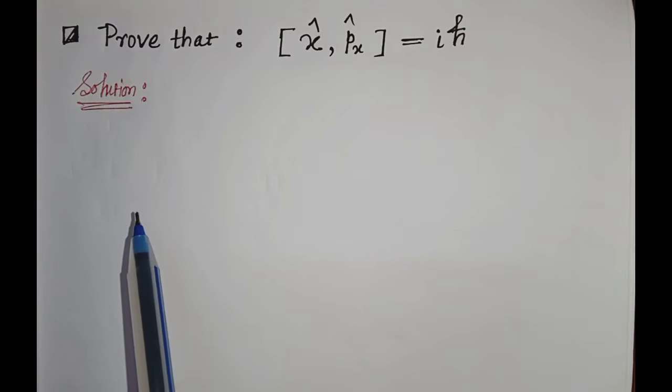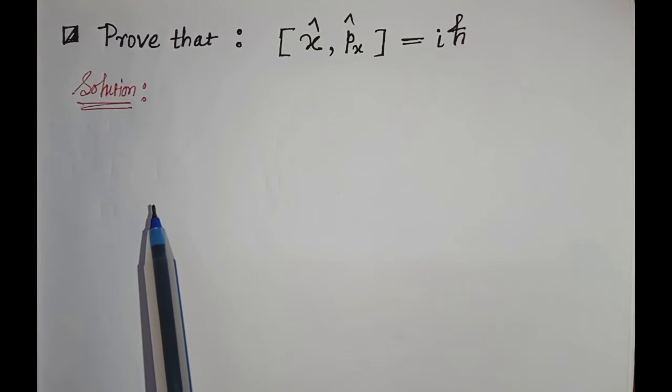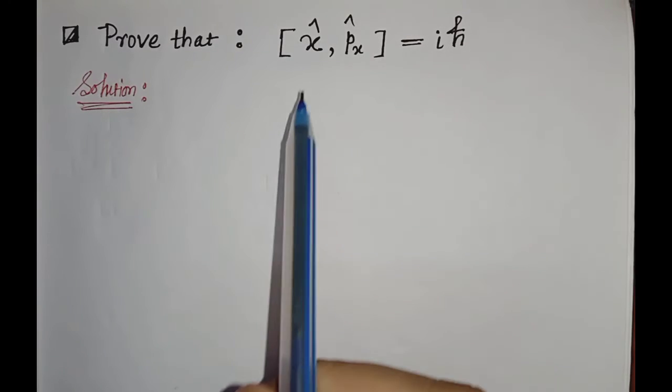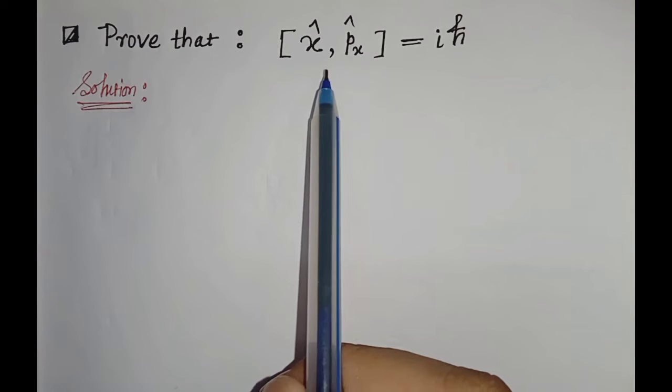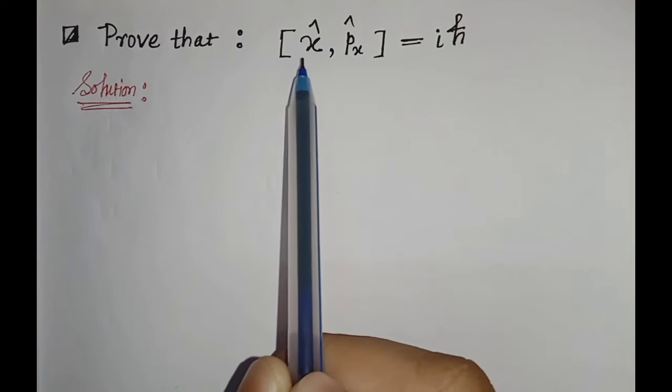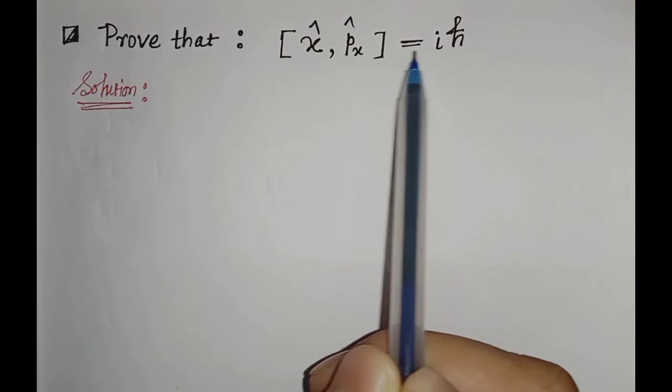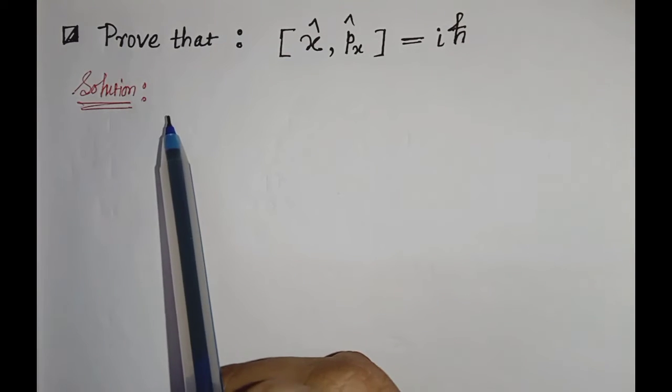Hello everyone. In this video, we will prove this quantum mechanical relation — that is, the commutation relation [x, px] = iℏ.